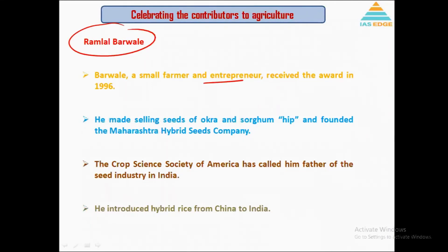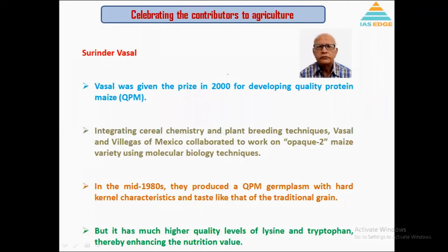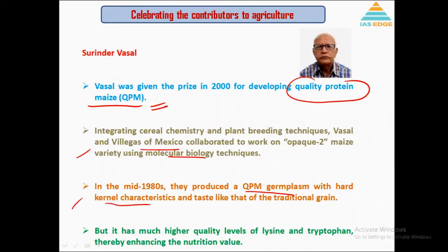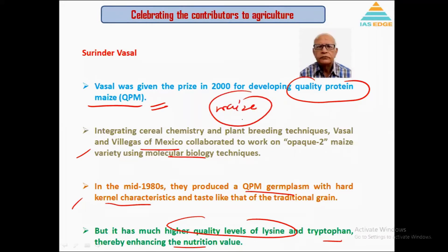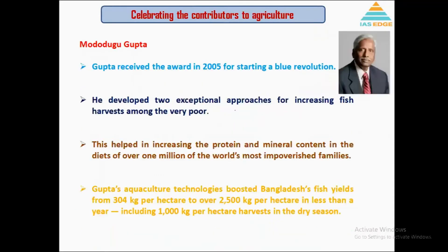Ramral Barawale is a small farmer and entrepreneur called the Father of the Seed Industry in India, who introduced hybrid rice in India. Surinder Vassal is credited with developing quality protein maize — QPM germplasm with higher levels of lysine and tryptophan, enhancing nutritional value. Mother Dugu Gupta is the person behind the Blue Revolution, meaning fisheries. His ideas brought a protein revolution in India, making fish cheaper and more accessible, especially for lower income groups. This helped increase protein and mineral content in the diets of millions of impoverished families.